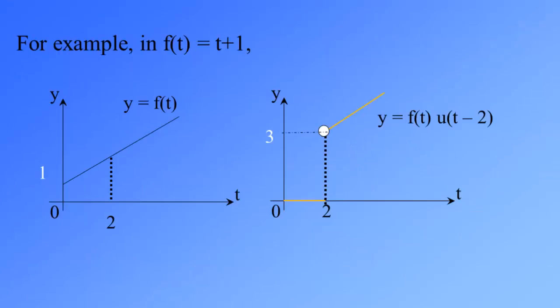For example, if f(t) equals t plus 1, you see the graph on the left-hand side, the graph of y equals f(t) equals t plus 1. And then if you multiply f(t) with u(t-2), then the portion of the graph before t equals 2 is cut off and becomes 0. Whereas after t equals 2, the portion of the graph continues. So that means the graph is cut off before t equals 2.